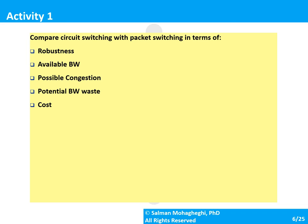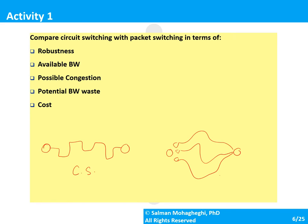In circuit switching, two hosts communicate through a circuit dedicated to them for the duration of communication. In packet switching, there is no dedicated circuit — every packet might go through a different route. In terms of robustness, if an intermediate switching device fails in circuit switching, the entire circuit fails. In packet switching, only the packet going through that failed route is lost; the rest are rerouted. So packet switching is superior in robustness.